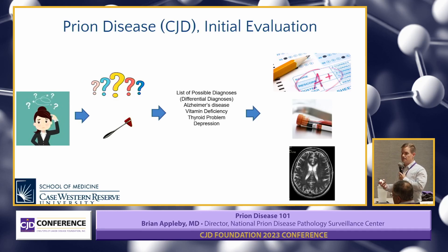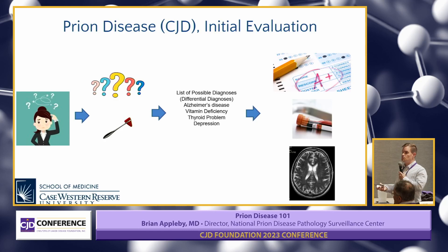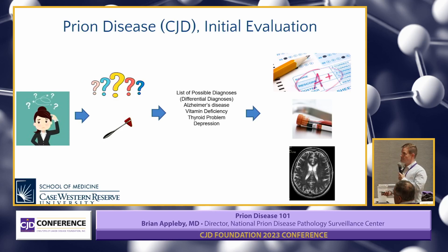So they may get formal memory testing — something called neuropsychological testing. They may do blood tests and look for vitamin deficiencies. They may even do brain imaging to look for things like stroke or a tumor.